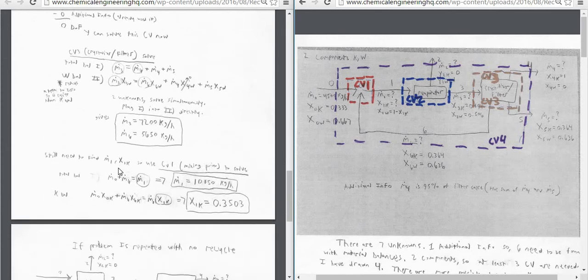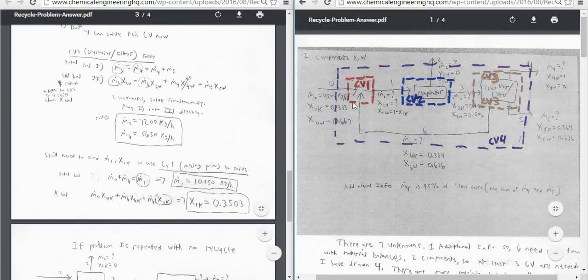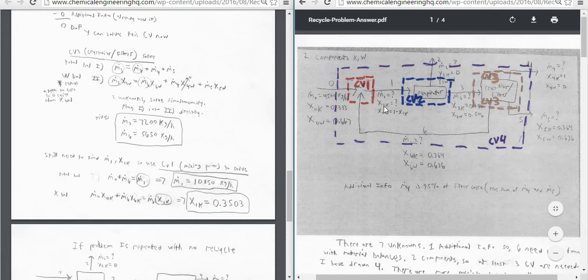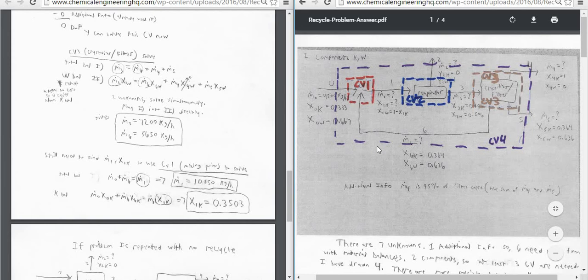But we still need to find M1 and X1K. So we can use CV1 mixing point, so this red one, to solve for them. Because if you look, M1 and X1K cross that line, and we'll have two material balances, and therefore we'll be able to solve it. And we already know M6. We just found that.